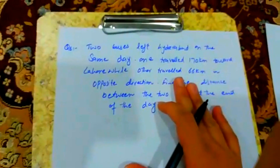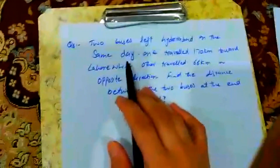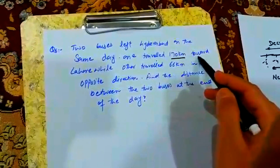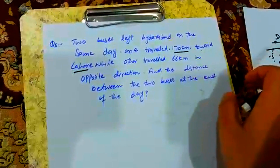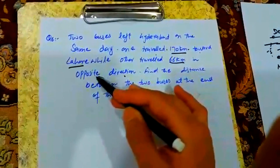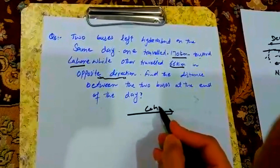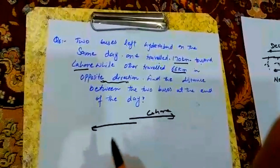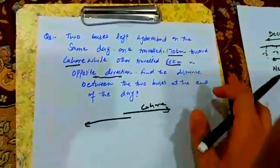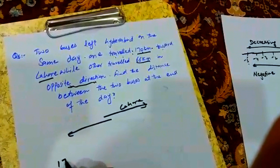Question 6: Two buses left Hyderabad on the same day. One travelled 170 km towards Lahore. The other went 66 km in the opposite direction. Lahore is in one direction, and the other bus goes the opposite way. We need to find the distance between the two buses at the end of the day. One bus travels 170 km, so we write positive 170.